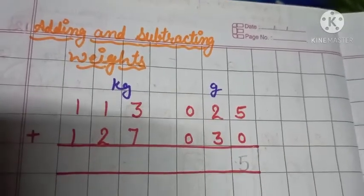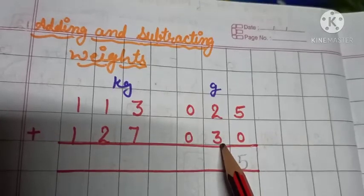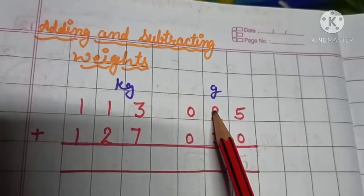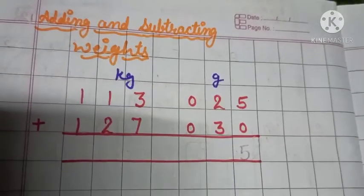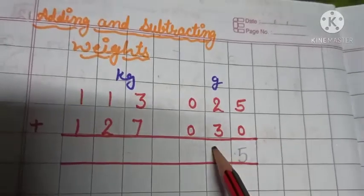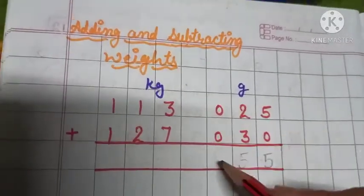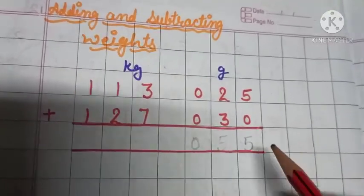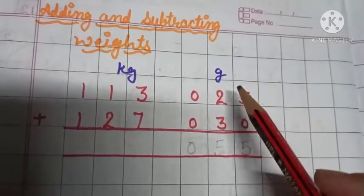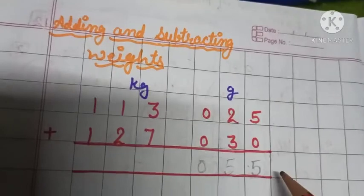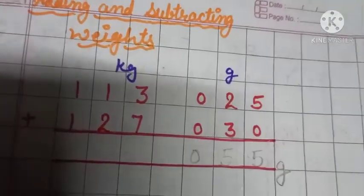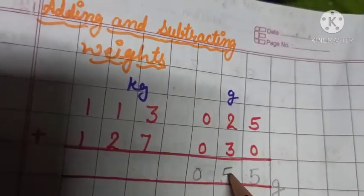Now, we have to add 2 and 3. 3 is greater than 2. Keep this 3 in your mind and 2 in your finger boxes. When we add, we get 5, very good. And 0 plus 0 is 0. So here, we added the values of gram. So 55 gram.